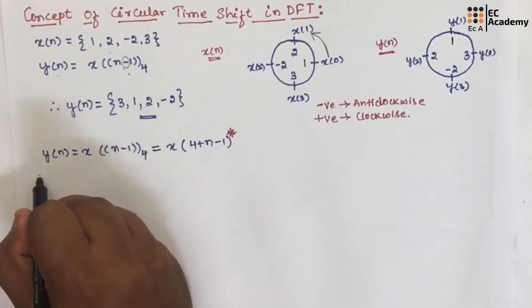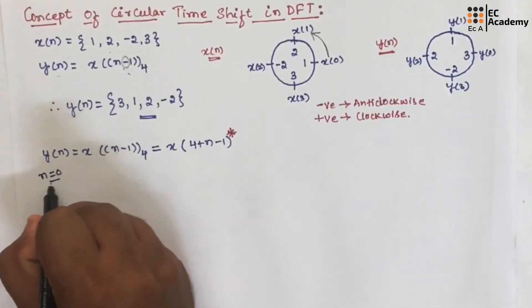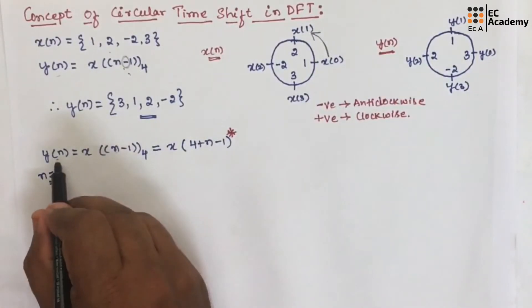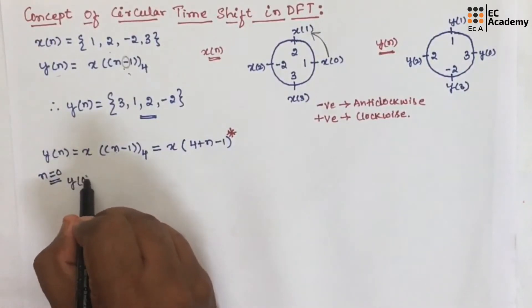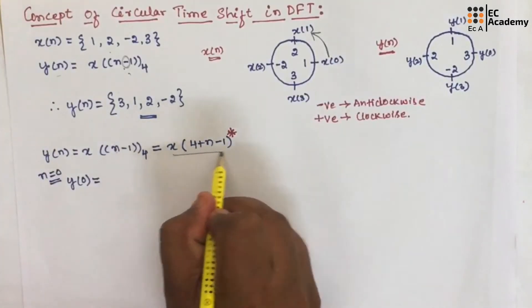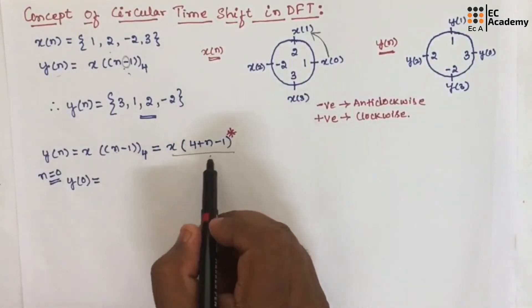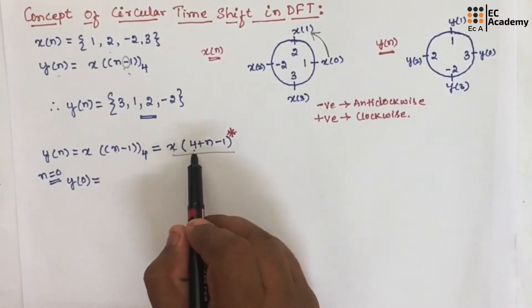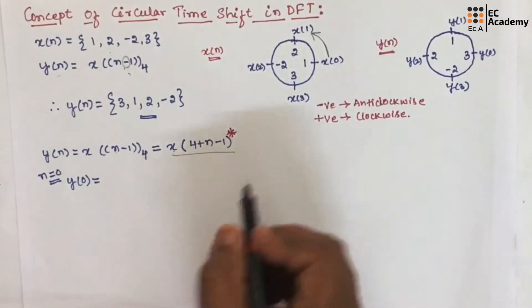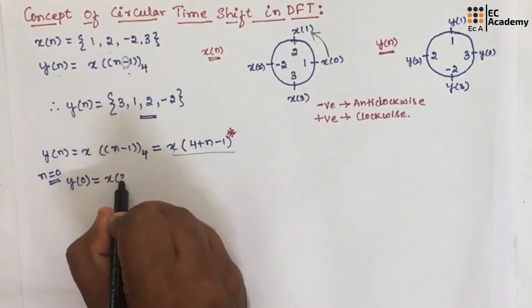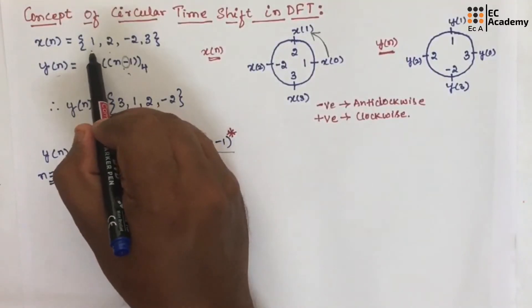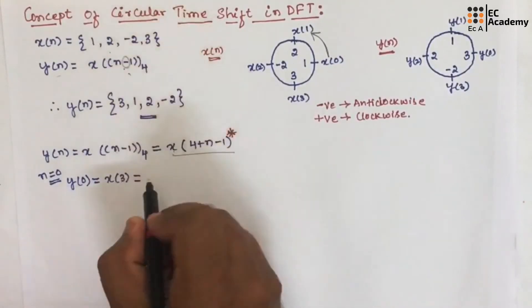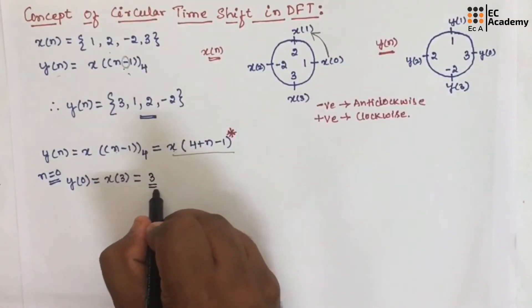Now let us put different values for n. If we put n equal to 0 in the equation, y of 0 will be equal to x of 4 minus 1, which is x of 3. The value x of 3 is 3, so we get y of 0 as 3.